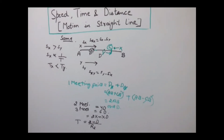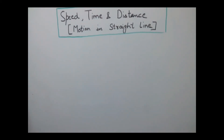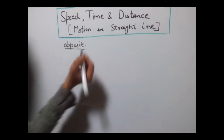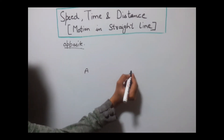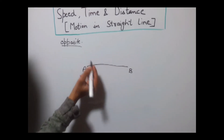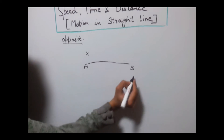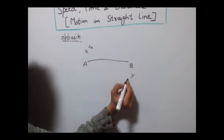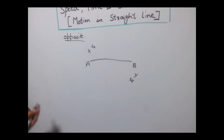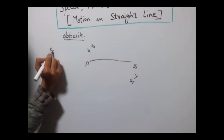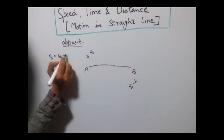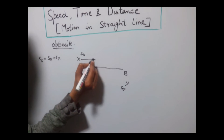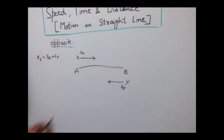Now let's see what happens in the case of opposite directions. Suppose there are two points A and B, and two objects X and Y. Speed of object X is SX and speed of object Y is SY. Their relative speed would be SX plus SY because both of them are moving in opposite directions — X is moving in one direction and Y in the other.